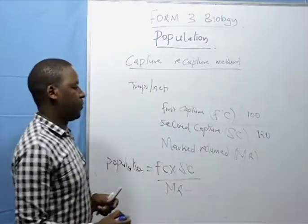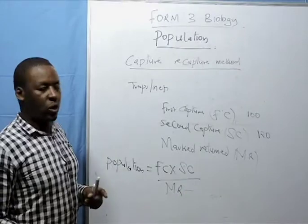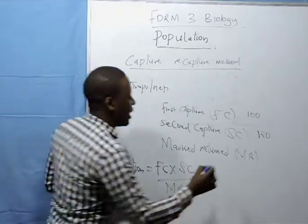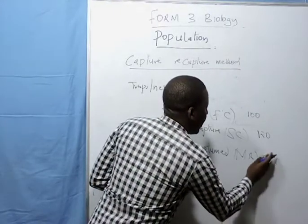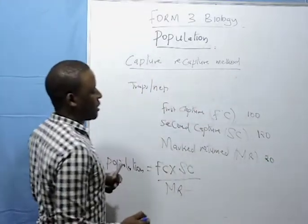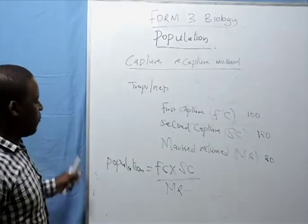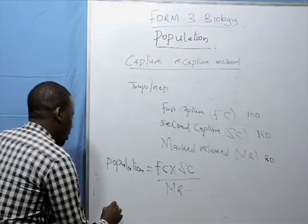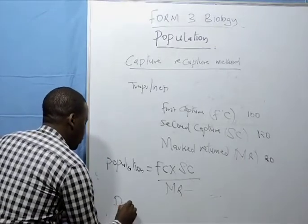Out of the 120 that were caught, probably 20 of them had a mark returned. So to get a population would be...